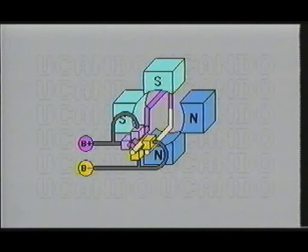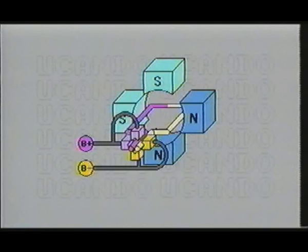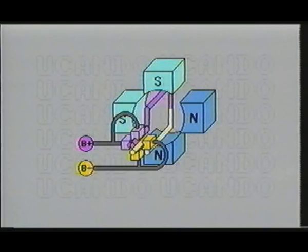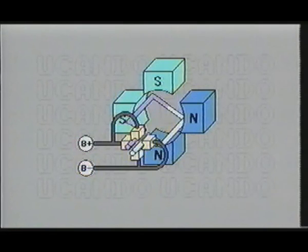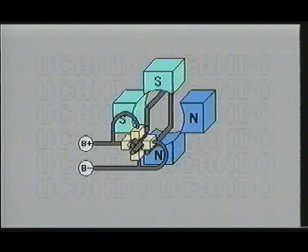Here you see another permanent magnet brushed DC motor. This motor is using four brushes and four permanent magnets. Notice that its operation is exactly like the two-brush motor you just examined.